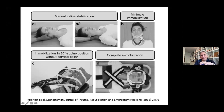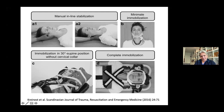There are four types of immobilization. Manual inline stabilization as shown in A1 and A2 of this scheme provides inline immobilization of the cervical spine. Minimal immobilization uses a cervical collar, also known as the Philadelphia collar. Immobilization in a 30-degree supine position without a cervical collar is used more in patients with cranial traumatism, and complete immobilization covers the head and the entire spine.